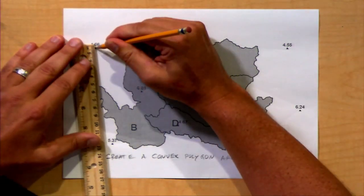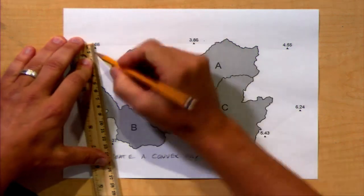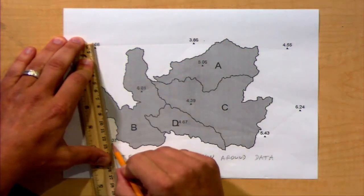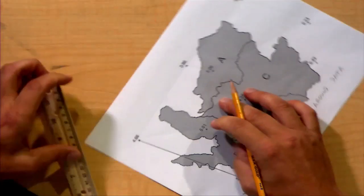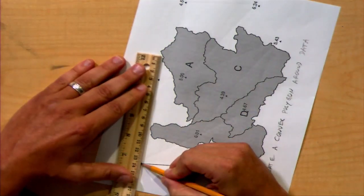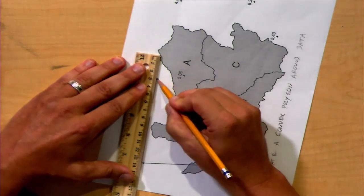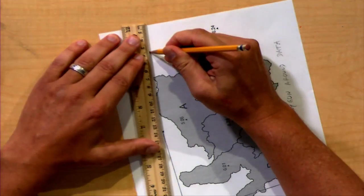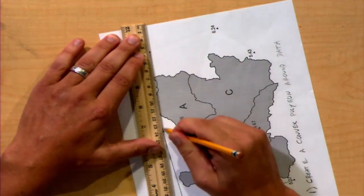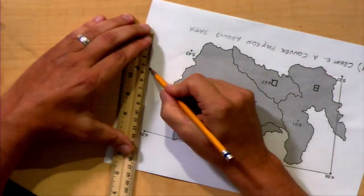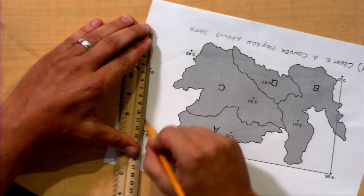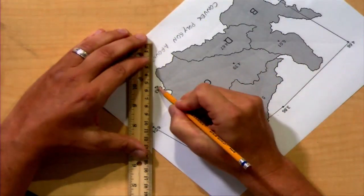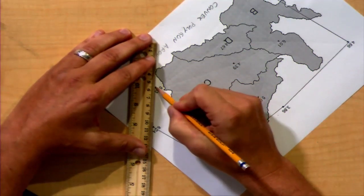In other words, I'm going to connect points here. Here's 4.66 to the 5.37. So I continue around the outside, the 4.66 will connect to the 3.86. We continue around the grid to the 4.55, then to the 6.24, then to the 5.34.